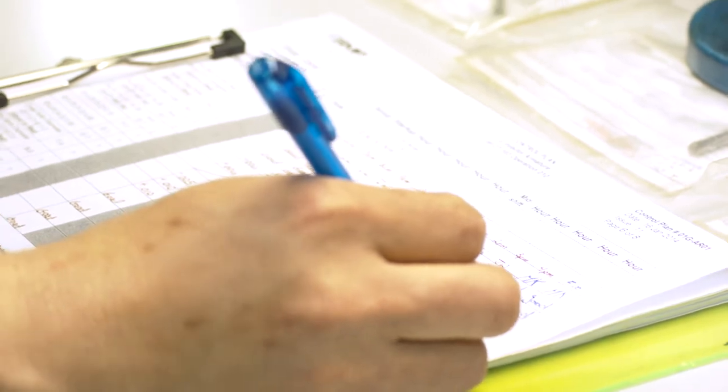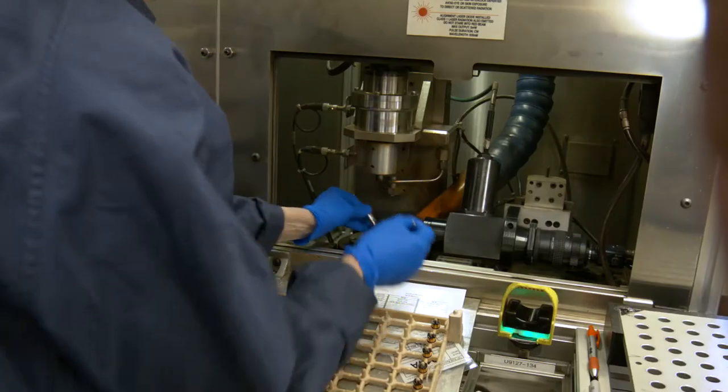Once inspected, the parts are ready for assembly. Throughout the clean room assembly process, which includes precision laser welding, the parts are subjected to continual quality control measures.